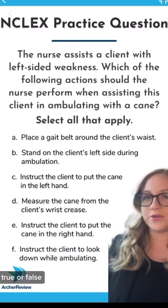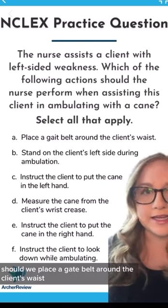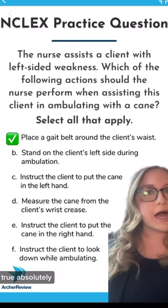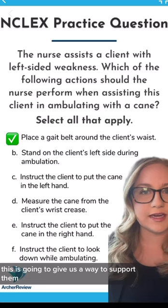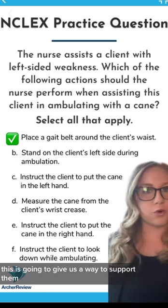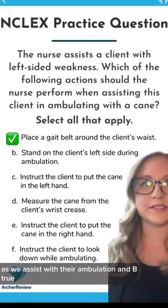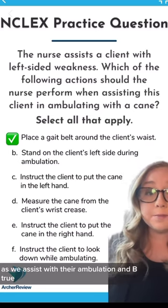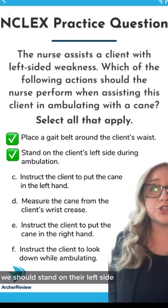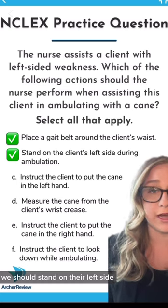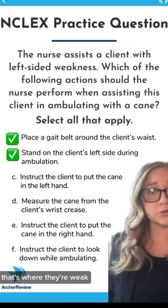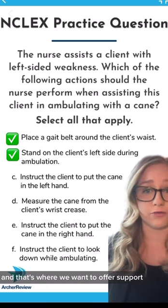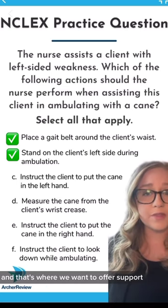True or false? Should we place a gait belt around the client's waist? True — absolutely. This is going to give us a way to support them as we assist with their ambulation. And B — true. We should stand on their left side. That's where they're weak and that's where we want to offer support.